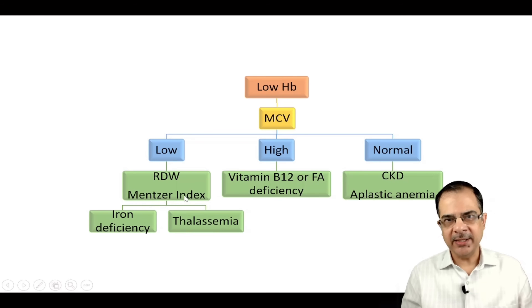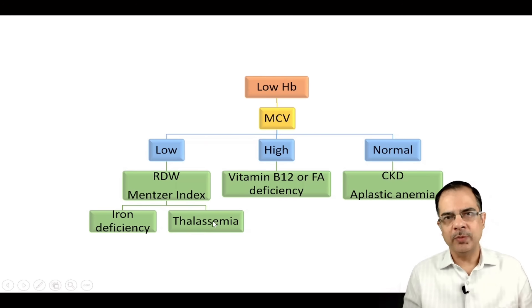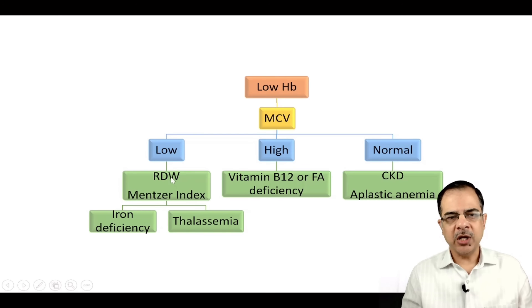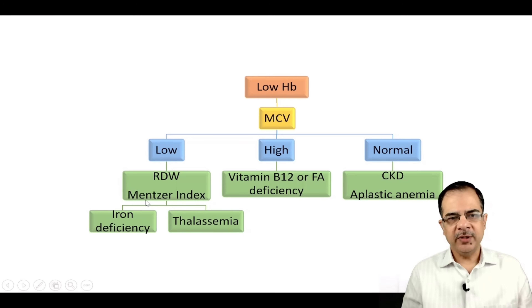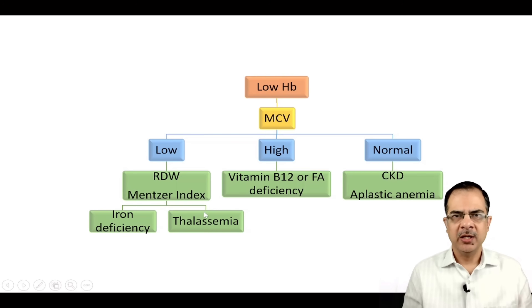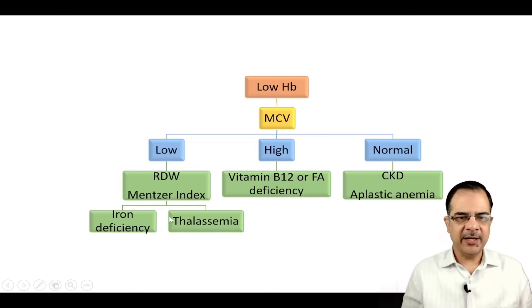If MCV is low — less than 80 — we check the RDW and the Mentzer Index. Low MCV is commonly caused by iron deficiency or thalassemia; sideroblastic anemia is rarer in OPD. If RDW or the Mentzer Index is high, it favors iron deficiency; if low, it favors thalassemia. RDW more than 15 suggests iron deficiency. The Mentzer Index is MCV divided by RBC count: more than 14 favors iron deficiency, less than 14 favors thalassemia.